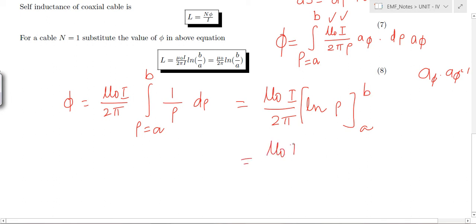After simplification we will get this value as ln b minus ln a. You know that log b minus log a is log b by a. Mu 0 I by 2 pi ln b by a.